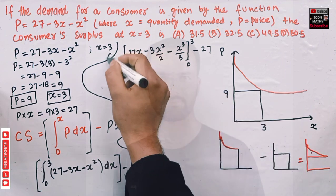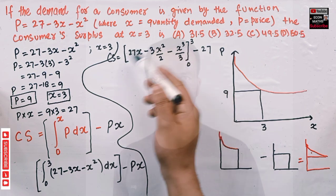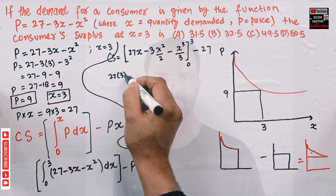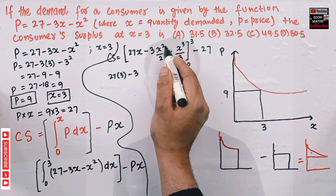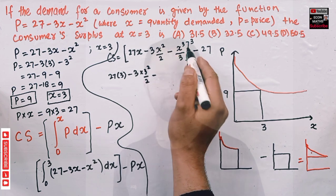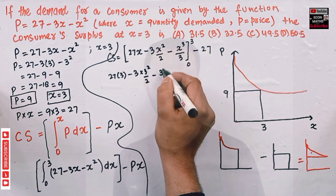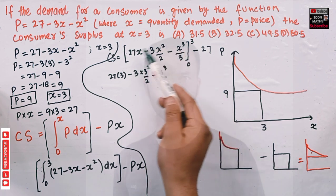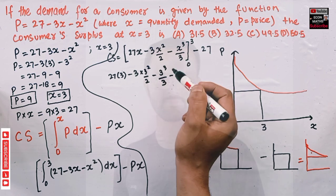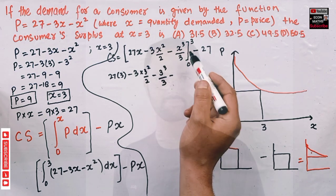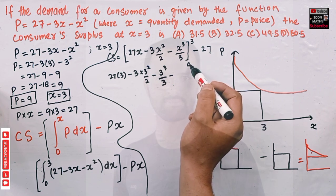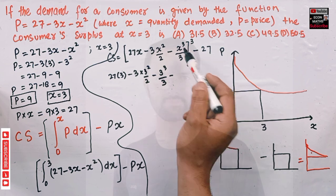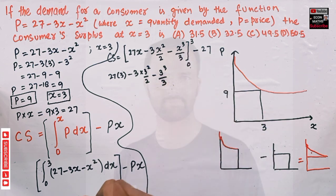Now evaluate the expression at the upper limit x = 3: 27(3) - 3(3²)/2 - 3³/3. At the lower limit x = 0, all terms equal 0 since x is involved, so we don't need to subtract any lower-limit values. Then we subtract the total expenditure of 27.